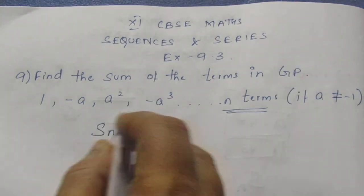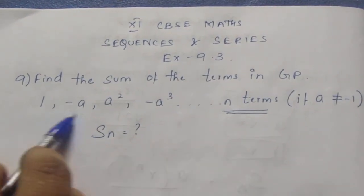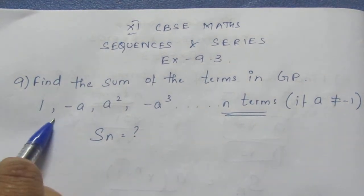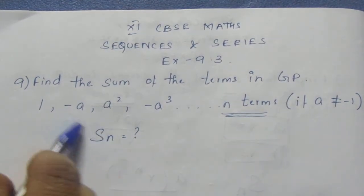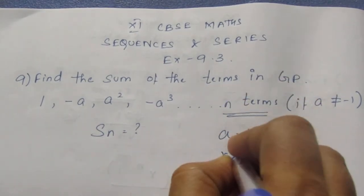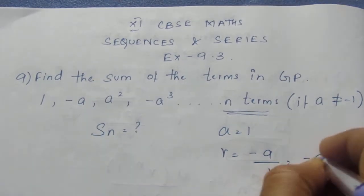We can use the Sn formula only if we know r, because there are two formulas for Sn. Only if we know the r value, the common ratio value, we will know what formula to apply. Here a = 1, r = t₂/t₁, that is the second term by the first term, which is -a.